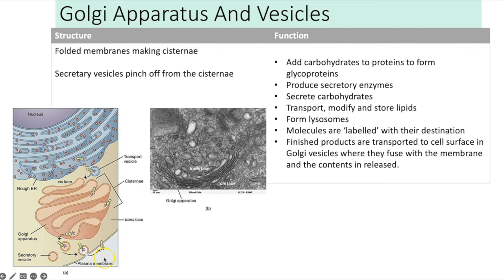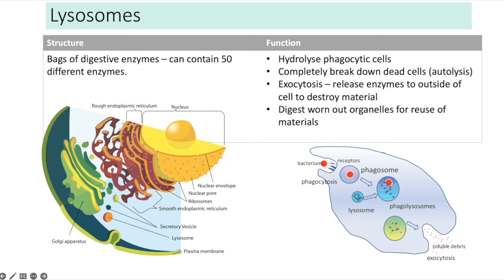Lysosomes are bags of digestive enzymes — they can contain up to 50 different types. Their functions include hydrolyzing material in phagocytic cells, completely breaking down dead cells (autolysis), releasing enzymes outside the cell via exocytosis to destroy material, and digesting worn-out organelles for reuse of materials.